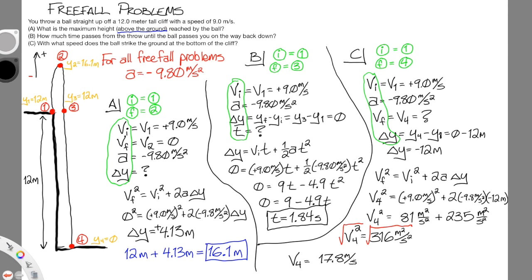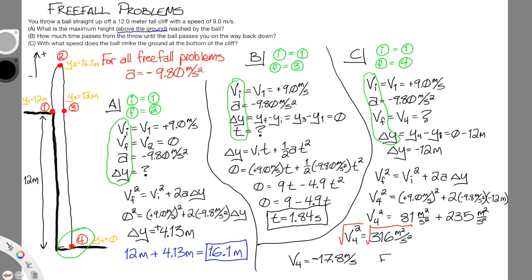17.8 m/s is the speed we want. If the problem asked for velocity, remember that when you take the square root you must decide whether the answer is positive or negative. Looking at the diagram at snapshot 4, the ball is clearly moving downward, so the velocity would be negative 17.8 m/s. But the final speed is just 17.8 meters per second — no sign — because speed is a scalar.